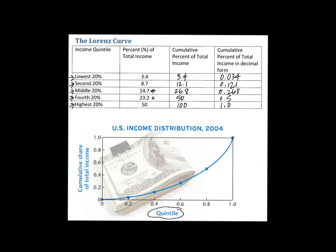The y-coordinates are those decimal values. The x-coordinates represent the cumulative population percent. So we start at (0, 0) — zero percent of the population makes zero percent of income. Then (0.2, 0.034), then (0.4, 0.121), then (0.6, 0.268), then (0.8, 0.5), and finally (1.0, 1.0) since 100 percent of the population made 100 percent of the income.